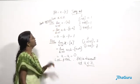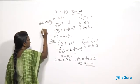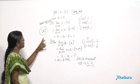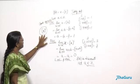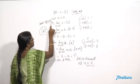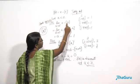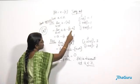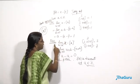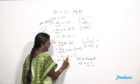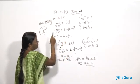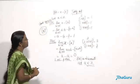Even if it is not x minus the greatest integer function, but only the greatest integer function alone, it is also discontinuous at every integral value. For the greatest integer function, the left-hand limit at 'a' would be a minus 1, and the right-hand limit would be 'a'. Since a minus 1 and a are different, the greatest integer function alone is also discontinuous at every integer.